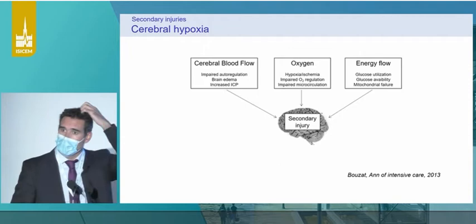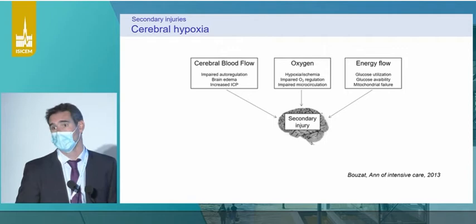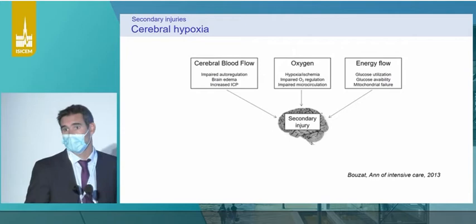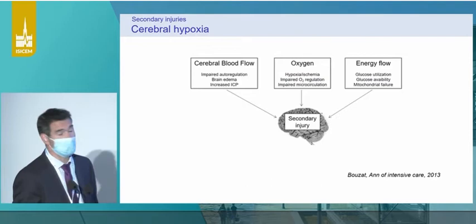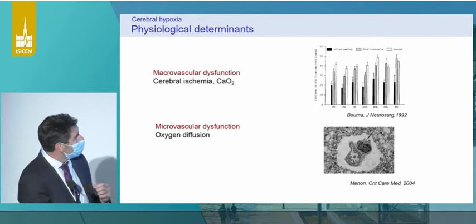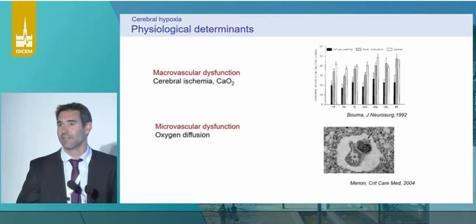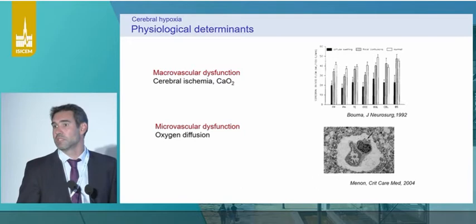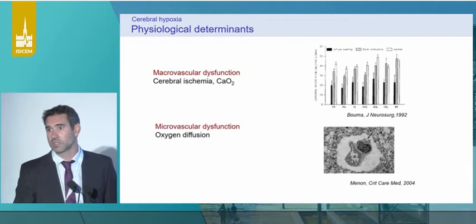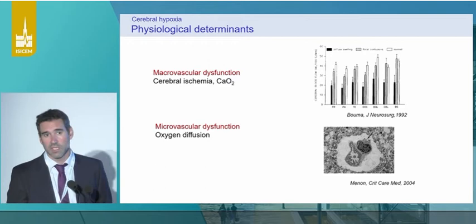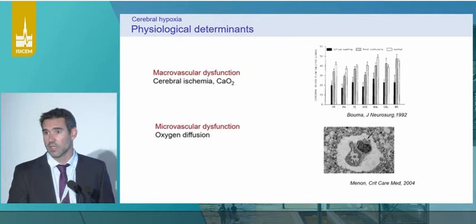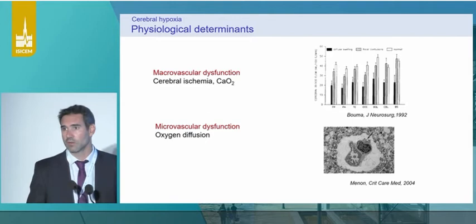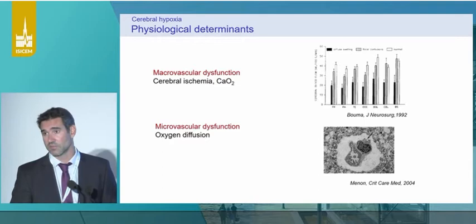Why do we want to measure brain oxygenation in our patients? Obviously because it's one of the major determinants of secondary brain injury. By measuring PbtO2, you can have numbers and maybe treat those numbers to normalize or improve brain oxygenation. That's the main reason. We have to understand how to interpret PbtO2 and what it is linked to. We have two hypotheses for brain hypoxia. The first is macrovascular dysfunction — we know there is a decrease in CBF after traumatic brain injury, so you can have a drop in oxygen delivery. You can also have a drop in arterial oxygen content, meaning a drop in hemoglobin concentration or in PaO2.